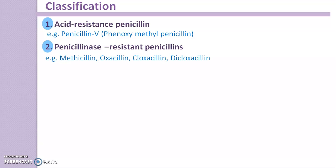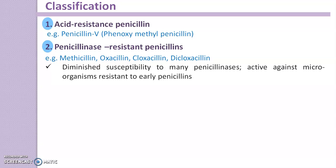The second class is penicillinase-resistant penicillins. Examples include methicillin, oxacillin, cloxacillin, and dicloxacillin. These penicillinase-resistant penicillins diminish the sensitivity to many penicillinase enzymes. This penicillinase enzyme disrupts the internal structure of penicillins, opening the beta-lactam ring and inactivating the penicillin.